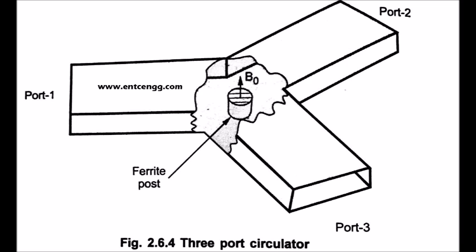The ferrite post is magnetized by static B field along the axis. It provides the necessary non-reciprocal property. The junction can be matched by placing suitable tuning elements in each arm. It is an essential component used to isolate the input and output in negative resistance amplifier. Three-port circulators are also used to couple a transmitter to various receivers.